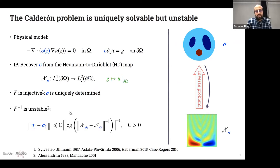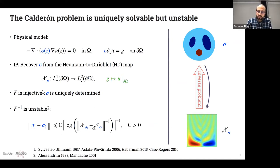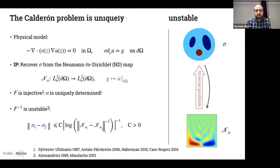The other aspect is instability. The inverse map — going from N_sigma to sigma — is unstable. Unstable means you only have a very weak log-type stability estimate: even if N_sigma_1 is very close to N_sigma_2, this doesn't mean sigma_1 and sigma_2 have to be close, because there is a log in between. The log goes to infinity very slowly, so there is continuity, but it is super weak — this is what is called a log-type stability estimate.